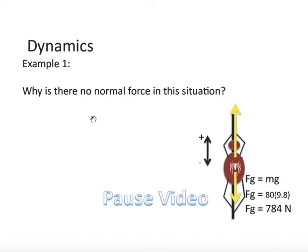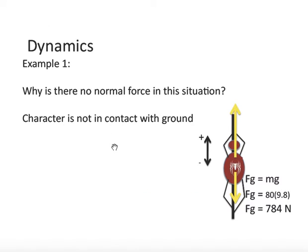Finally, why is there no normal force in this situation? I'd like you to give it some thought. Please pause video now. Well, it's because the character is not in contact with the ground. To have a normal force, the character or a person has to be in contact with the ground. In this situation, the character is hanging on a web.